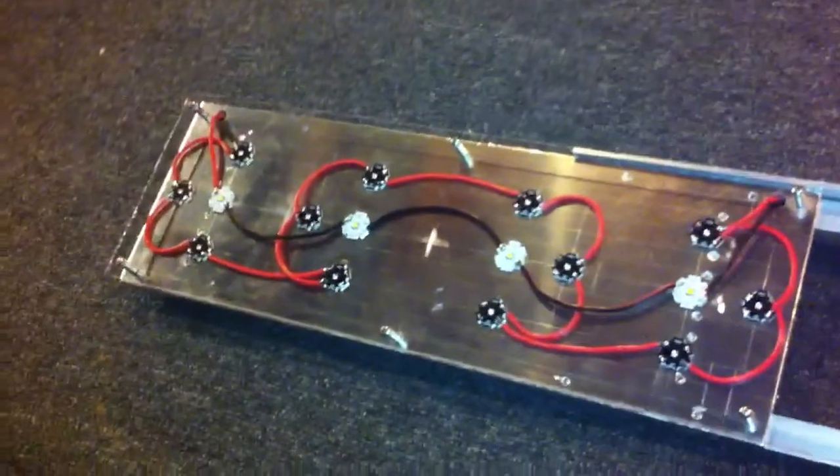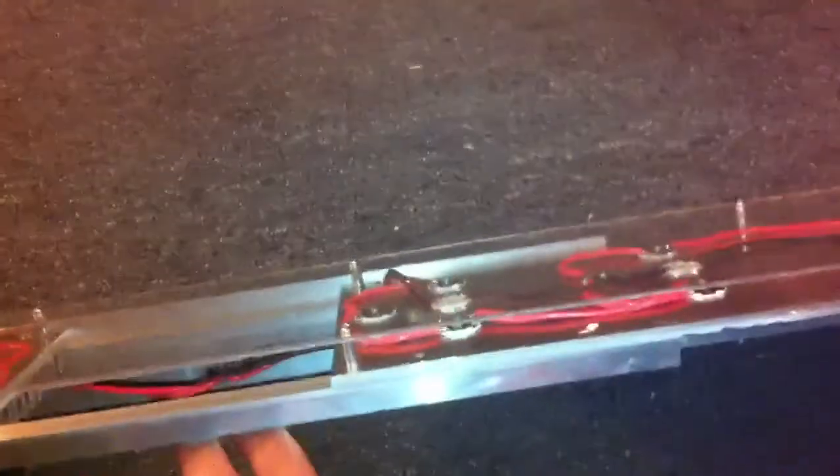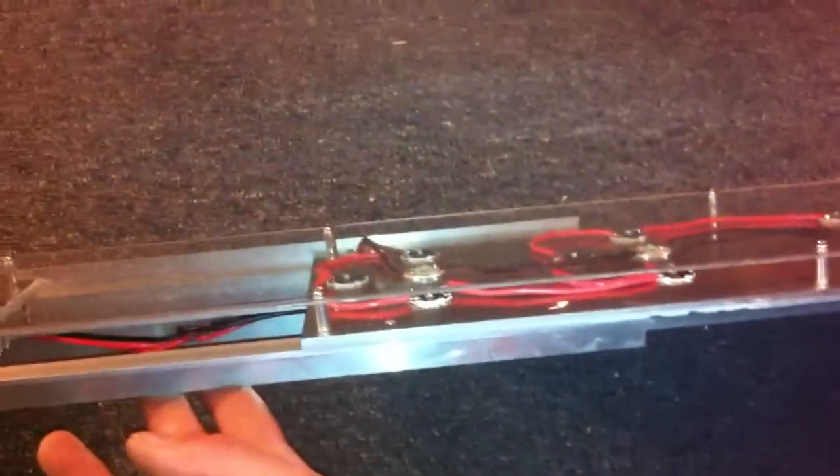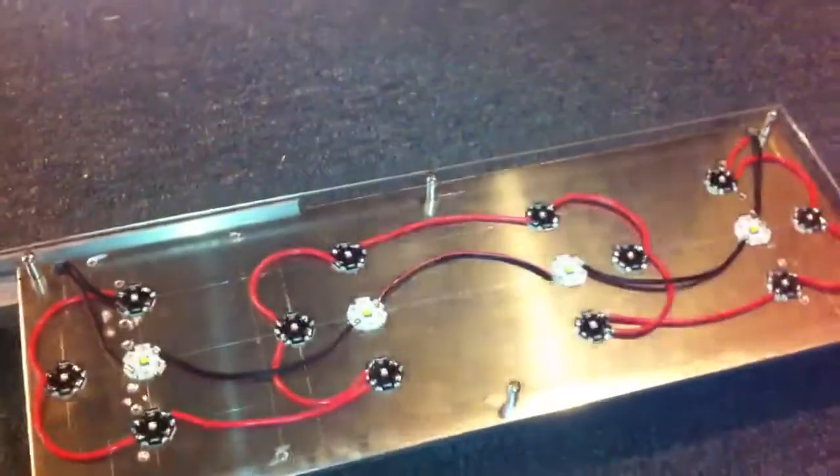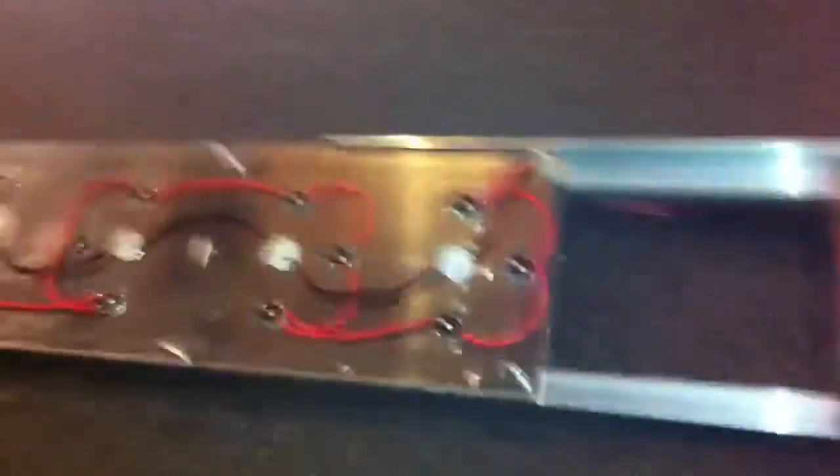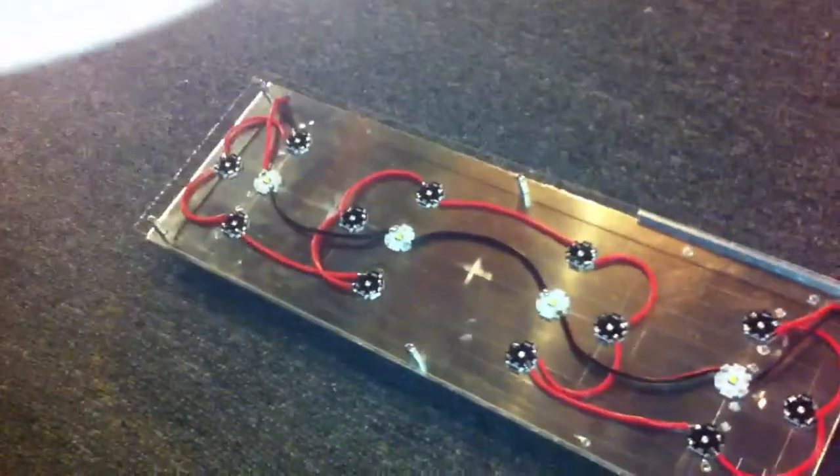And I've got some standoffs holding up the acrylic splash guard about a half inch away from my LEDs. That's just gonna keep the water from splashing up and damaging the LED, corrosion and all that. But you can see the way I laid it out, I've got these half circle looking wires connecting them.